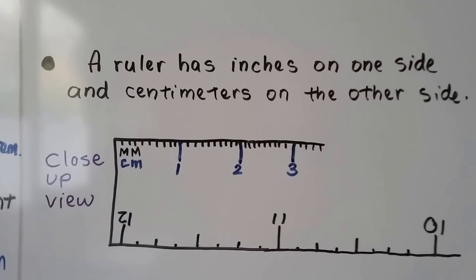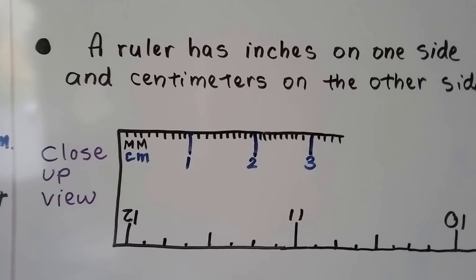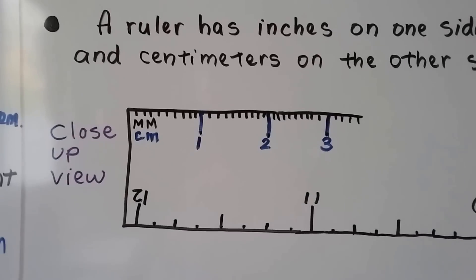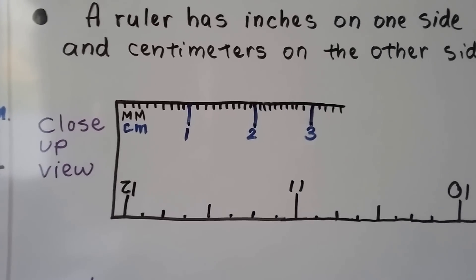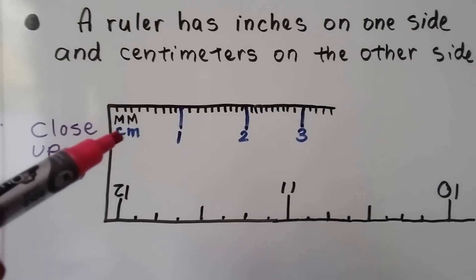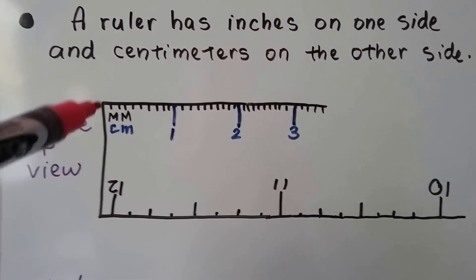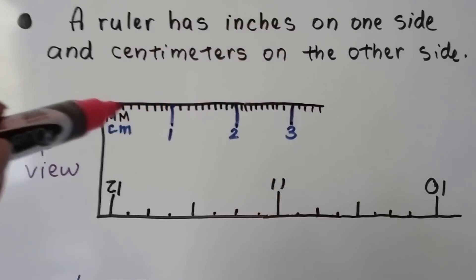A ruler has inches on one side and centimeters on the other side. This is what a close-up view would look like of a ruler. We've got one centimeter, two centimeters, three centimeters. And these little tiny lines are smaller than a centimeter. They're millimeters.